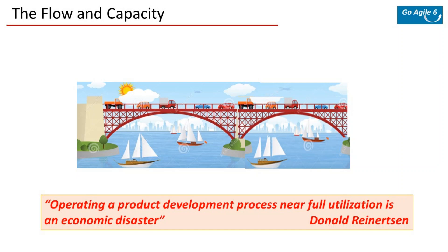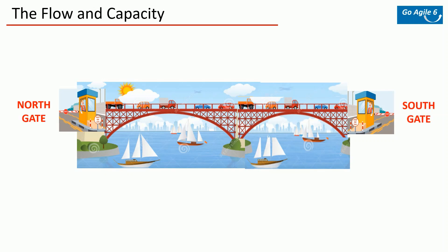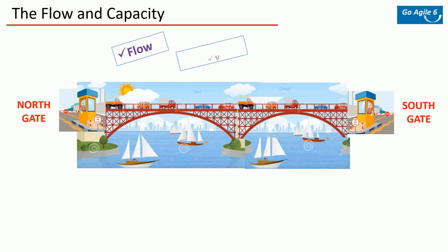One method to control flow is to introduce a system of issuing cards to each car that enters the bridge. On the north toll gate you maintain 100 cards — when a car enters you issue a card, and when they exit at the south gate they return the card. The south gate operator uses those same cards to issue to cars entering from the south, collected back at the north gate when they exit. By this you maintain a steady flow always within the limit of 100 cars — that is what we refer to as limiting the workflow, and you can also visualize the workflow with the number of cards in your bin.